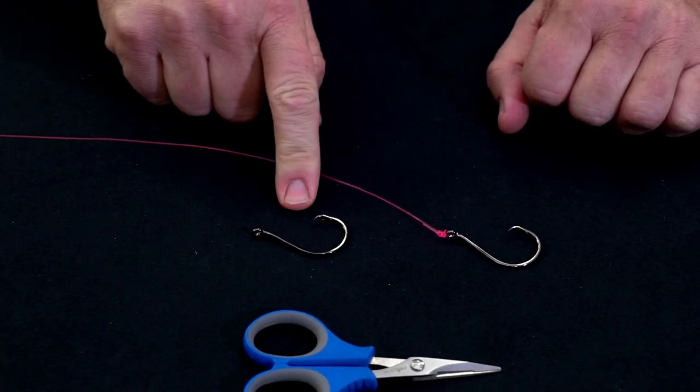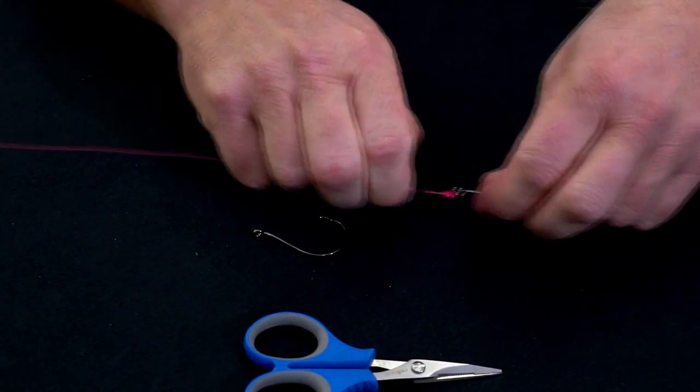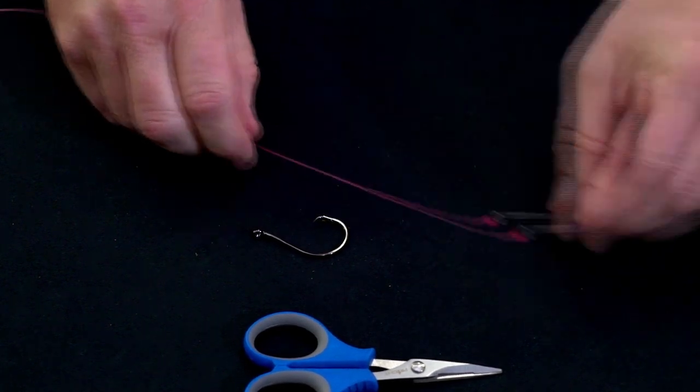Two Gamakatsu Circle Octopus 6-0s to show you how to snell line. 50 pound Maxima Fibre. I've already tied that first hook on there with a uni knot.